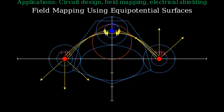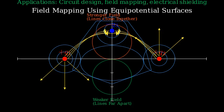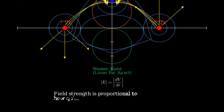In regions where the equipotential lines are close together, the electric field is stronger. Where they're further apart, the field is weaker. This makes sense because potential changes more rapidly in stronger field regions, so equipotential surfaces need to be closer together to represent equal steps in potential.